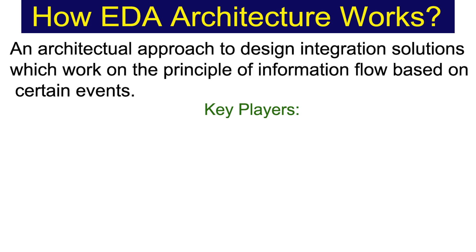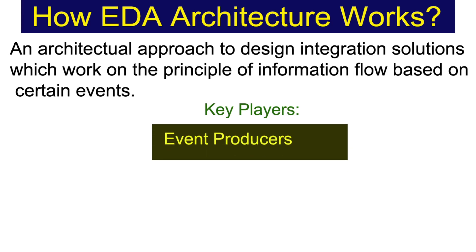If we talk about event-driven architecture, what are the key players which take part in the overall architectural design? The first and key player is the event producer. Whenever an event occurs, it always occurs on a system which generates a message or triggers an event. Event producers are those applications or systems which are producing the event — they are the source, also known as event emitters. In the example we were looking at, if an order has been placed, the order management system is the producer which triggers a new event to inform all other systems about that new order.